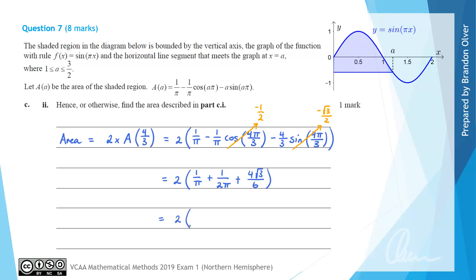Simplifying with a common denominator for the first two terms: 2/(2π) + 1/(2π) = 3/(2π). And 4√3/6 simplifies to 2√3/3. Multiplying through by 2: the final answer is 3/π + 4√3/3. The examiner's report has the same answer in a slightly different form; multiple equivalent forms are acceptable since no specific format was required.